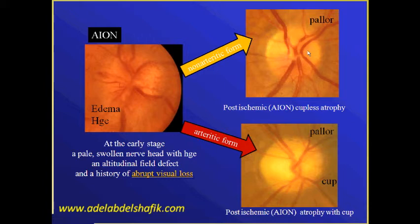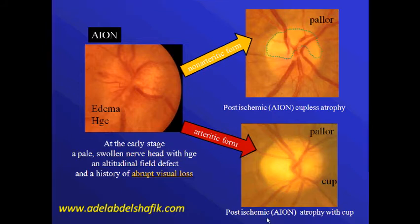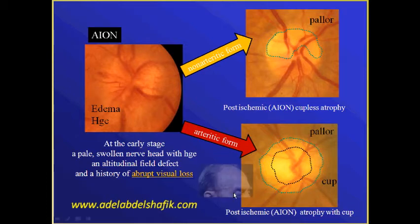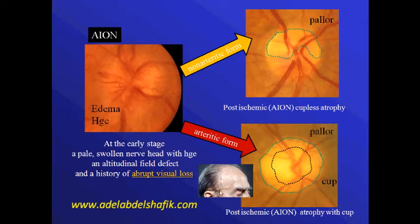In the non-arteritic form, the patient will pass into post-ischemic optic neuropathy with disc pallor and there is no cupping. On the other hand, in the arteritic form, when the patient passes into post-ischemic optic neuropathy, there will be cupping and there will be pallor of the remaining neural rim. Giant cell arteritis may be seen in the temporal vessels. The hallmark that helps us differentiate this cupping is the pallor of the neural rim.